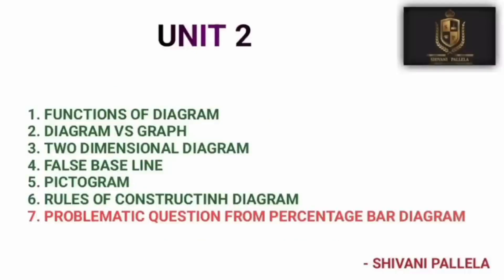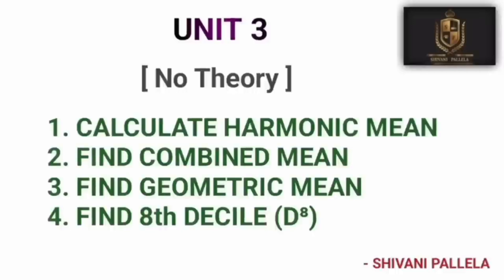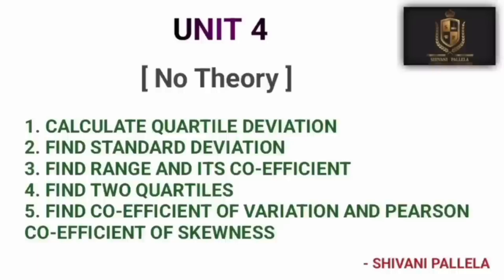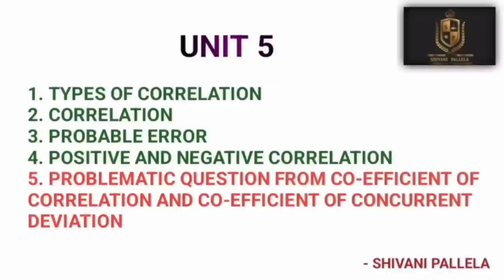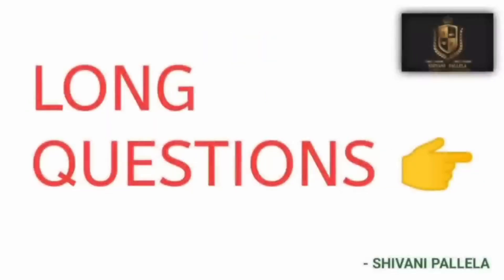From Unit 2, you can also expect pictograms, diagram versus graph, and functions of diagrams as theory questions. In Unit 3 there are no theory questions for four marks — completely problematic concepts like calculation of combined mean, harmonic mean, geometric mean, and deciles. Unit 4 also has no theory questions; Part A is all problematic concepts. From Unit 5, types of correlation and correlation are the two most important repeated theory questions. Problematic questions can come from correlation and concurrent deviation.